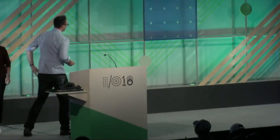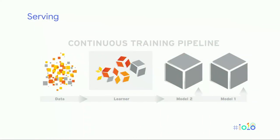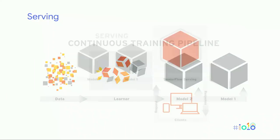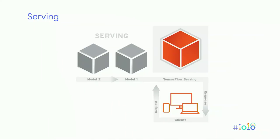Next is TensorFlow Serving — how we deploy models. We start with our data, use TensorFlow to train a model, and the output artifacts are saved models — a graphical representation of the data flow. Once we have those, we want to share them with the world. TensorFlow Serving takes our models and exposes them through a service so clients can make requests. TensorFlow Serving runs the inference, comes up with an answer, and returns it in a response.